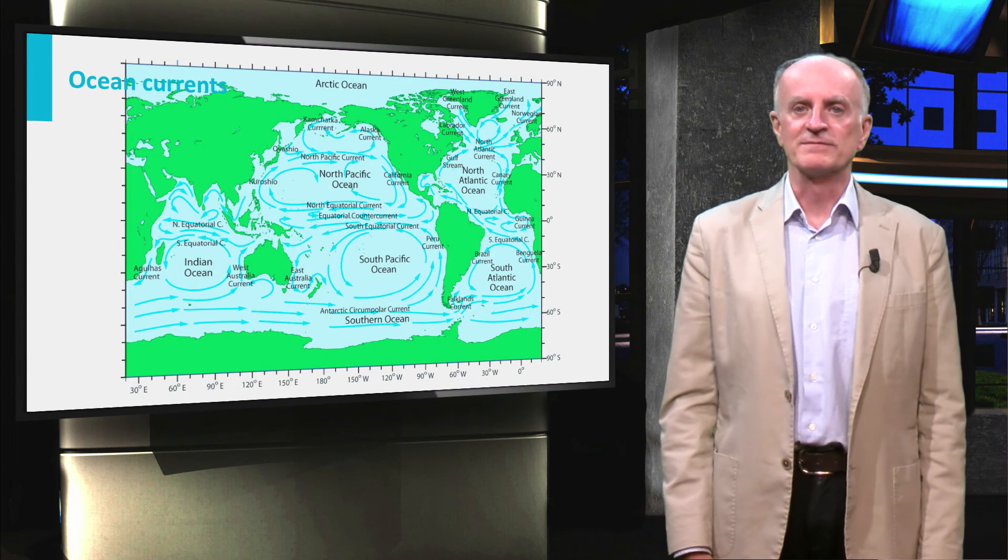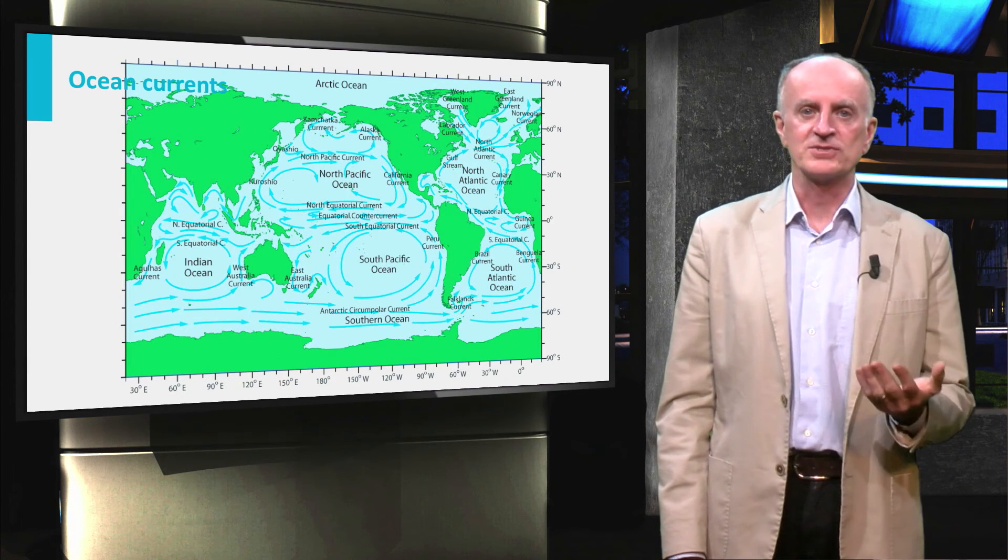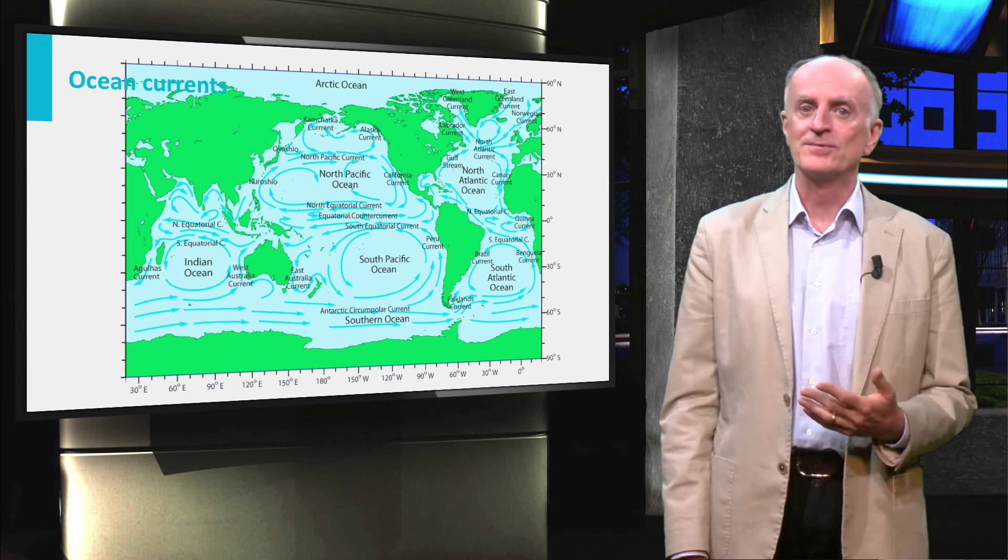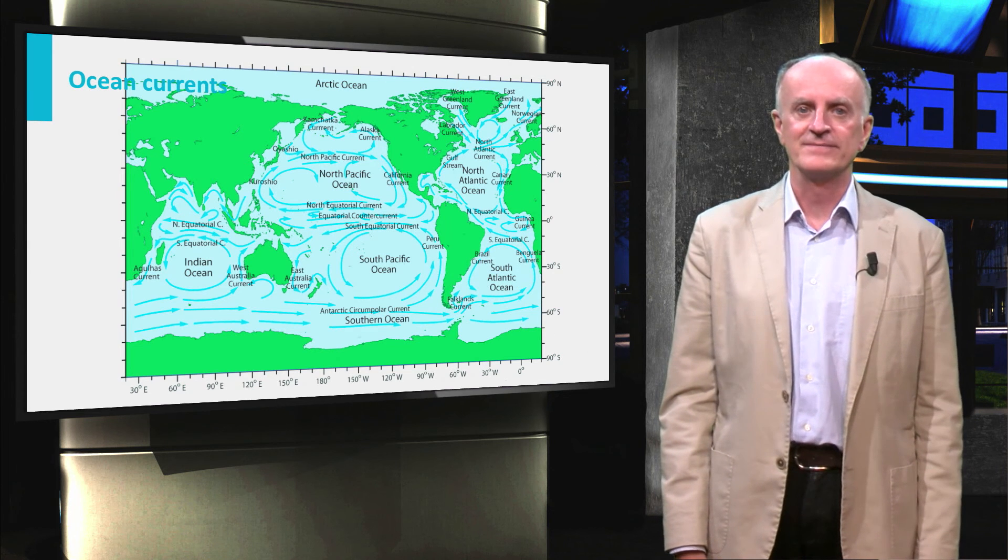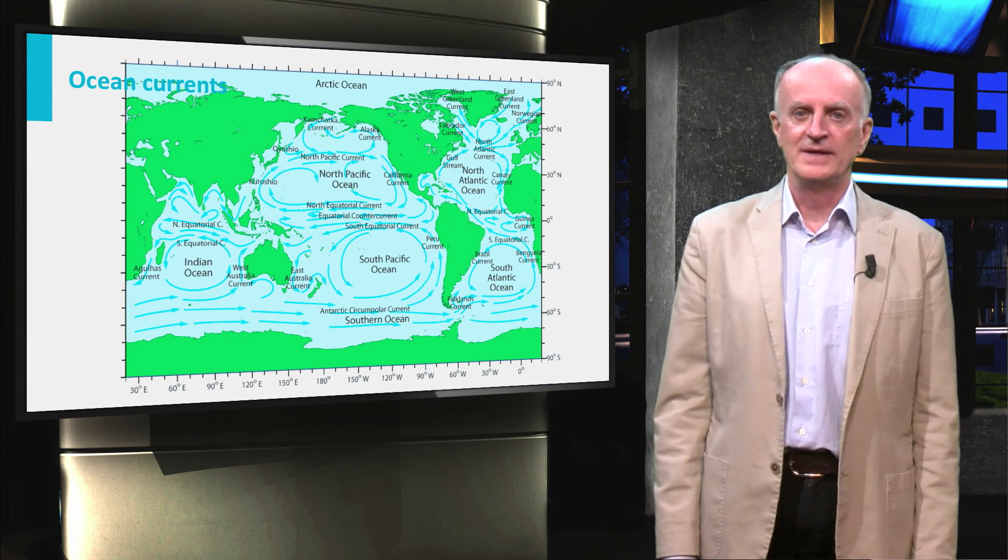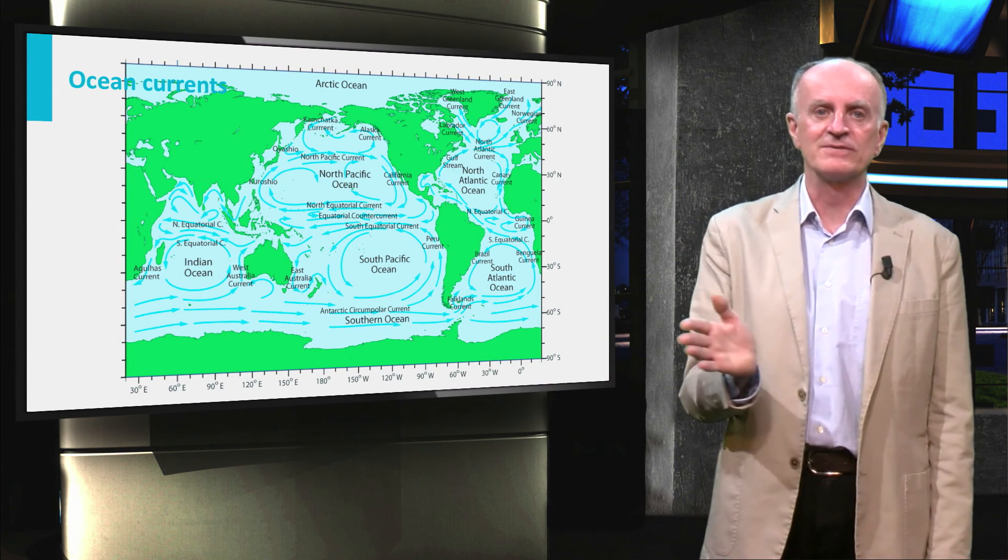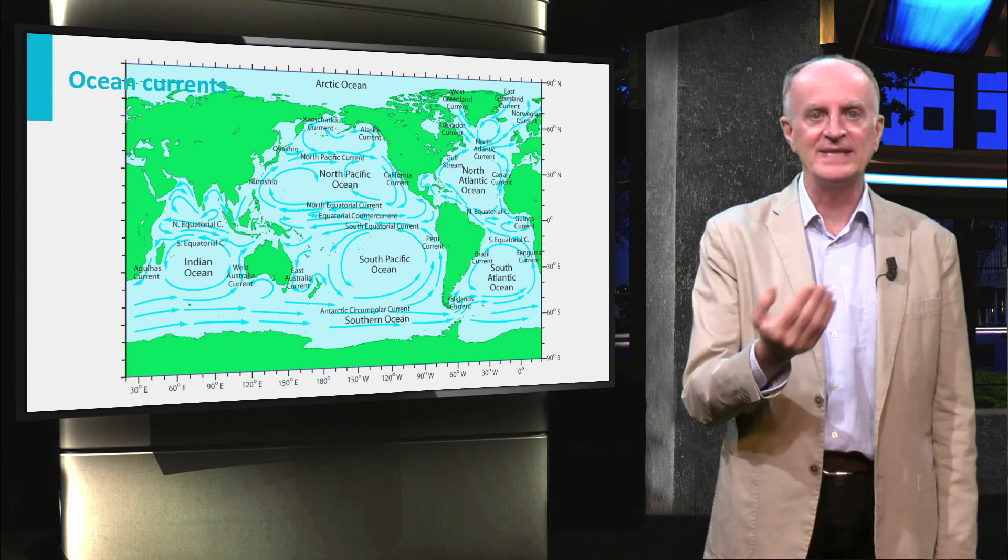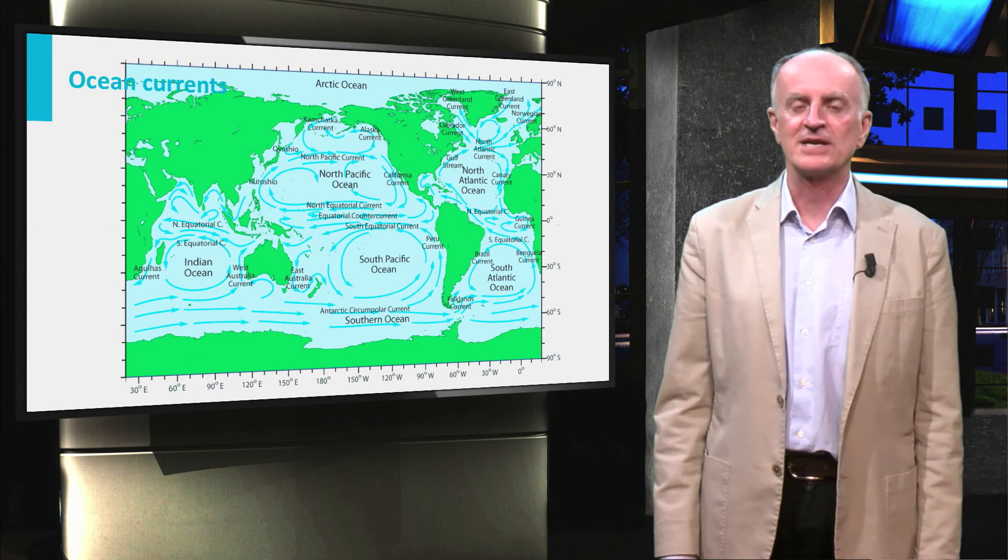Having looked at the distribution of sun energy and the resulting temperatures and wind patterns, you are now ready to look at ocean currents. Ocean currents are of the greatest importance in the Earth. They can travel for thousands of kilometers, distributing heat and affecting temperatures in large parts of the globe.